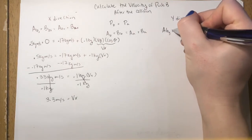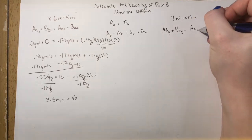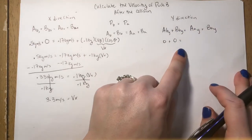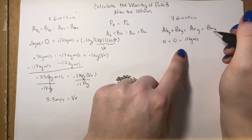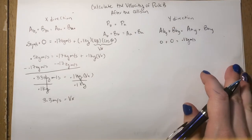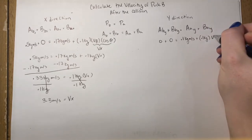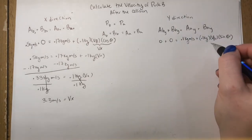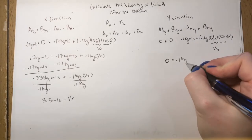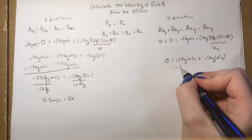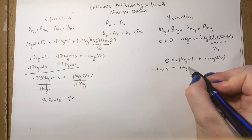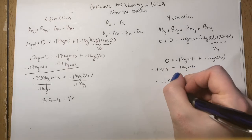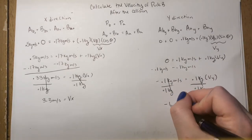Now we're going to solve for the velocity in the y direction. We're going to write out our subscripts using y. In the y direction beforehand, we know both A and B are 0. Puck A after in the y direction is traveling at 0.1 kilograms meters per second. And puck B we're going to write as 0.1 kilograms times the velocity times the sine of the angle. We're going to use velocity of y to denote it and simplify. We subtract both sides by 0.1 kilograms meters per second, then divide by 0.1 kilograms, which gives us negative 1 meters per second in the y direction.